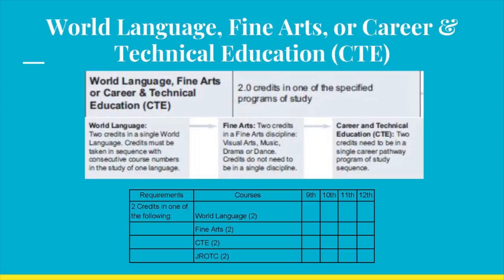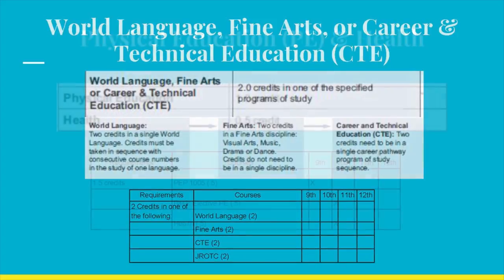In Fine Arts, two credits must be earned in the following disciplines: Visual Arts like Photography or Ceramics, Music like Band or Guitar, Drama, or Dance. Credits do not need to be in a single discipline. In CTE, two credits need to be in a single Career Pathway Program of Study sequence, like Public and Human Service Pathway and Culinary 1. JROTC is fulfilled with two years of JROTC.